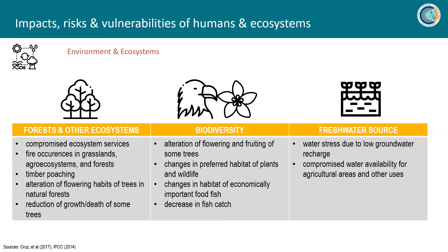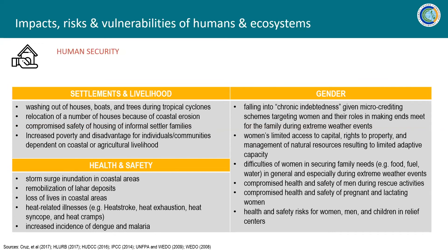For human security, we see that prolonged changing conditions and extreme weather events threaten human security. Recently, we've seen extreme weather events which resulted in loss of homes and livelihood — both raw materials and means to work like boats and other infrastructure — and also lives. Poverty conditions become exacerbated, especially for individuals in communities reliant on coastal and agricultural livelihoods, given that coastal and agricultural resources also face climate risks and impacts. There are also heat-related illnesses and incidents of dengue and malaria that have been observed to increase in scale.